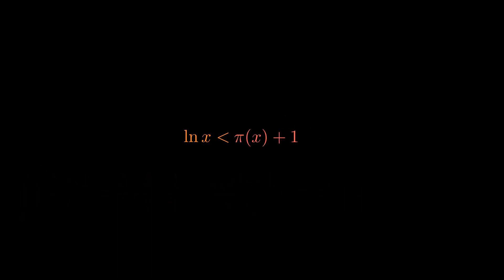And so we have that the natural logarithm of x is less than π(x) plus 1. Also, since π(x) is less than x, it implies that π(x) plus 1 is less than x plus 1. Subtracting each part of the inequality by 1, we get that ln(x) minus 1 is less than π(x), which is in turn less than x.